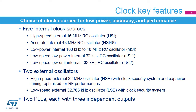The RCC offers a large choice of clock sources, which can be selected depending on low power, accuracy, and performance requirements. STM32WB microcontrollers embed five internal RC oscillators: a high-speed internal RC oscillator, or HSI, which can work at 16 MHz; a low-power internal RC oscillator, or MSI, working at 100 kHz to 48 MHz; an accurate RC oscillator, or HSI-48, working at 48 MHz; a low-speed, low-power internal 32 kHz RC oscillator, or LSI-1; and a low-speed, low-drift internal 32 kHz RC oscillator, or LSI-2, centered at about 37 kHz.